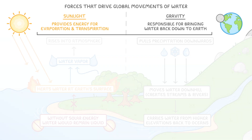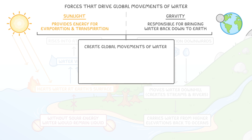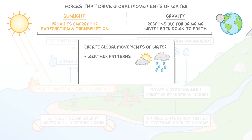These two forces work together continuously, creating the global movement of water that we see as weather patterns, ocean currents, and the constant cycling of water between different parts of our planet.